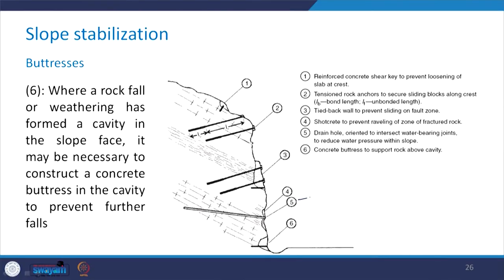Another component of the shotcrete installation is the provision of drain holes to prevent buildup of water pressure behind the face. This is shown as item number 5 — the drain hole oriented to intersect water-bearing joints to reduce water pressure within the slope. Water can pass through this drain hole and come out, so that water pressure is not built up inside the slope.